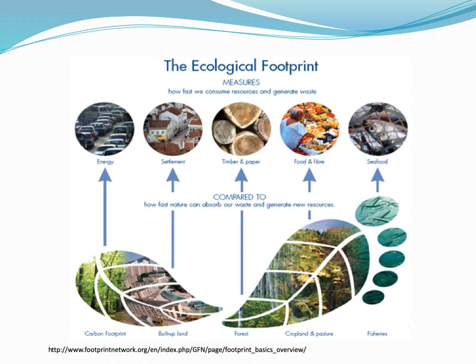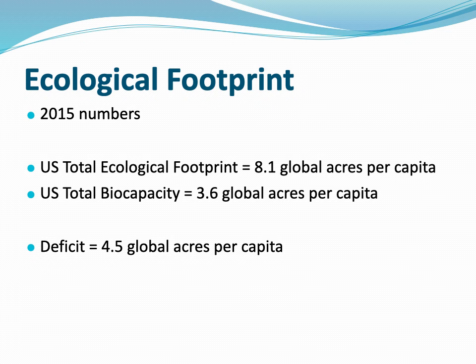One of the things you'll do this week for homework is go online to do your ecological footprint. It's a measure of the human demand on nature and can be looked at from a community, cultural, or personal standpoint. You'll take a short quiz to look at your carbon footprint, building footprint, and how your lifestyle affects forests, croplands, and pasture. Interestingly, the 2015 data shows that the US total ecological footprint is over eight global acres per person.